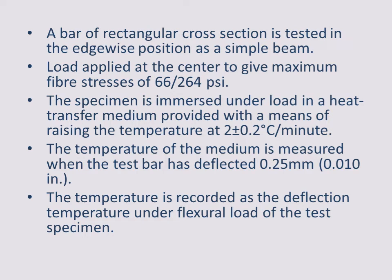A bar of rectangular cross section is tested in the edgewise position as a simple beam, with load applied at the center to give a maximum fiber stress of 66 or 264 psi. The specimen is immersed under load in a heat transfer medium, with temperature rising at 2 ± 0.2 degrees Celsius per minute. The temperature of the medium is recorded when the test bar deflects 0.25 mm (0.010 inch), and this is recorded as the deflection temperature at the stated load.